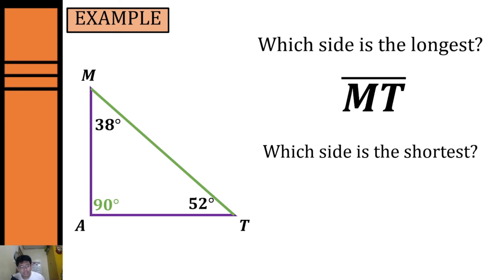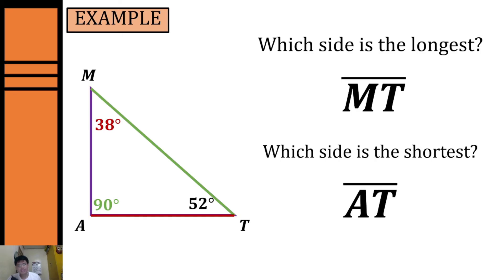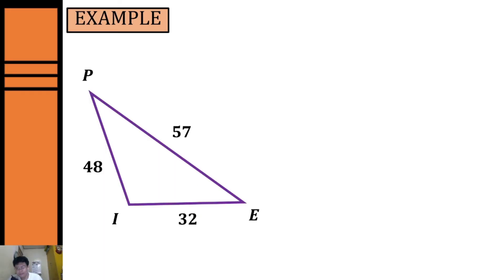Now let's look for the shortest side. To get our shortest side we have to identify our smallest angle. Our smallest angle in this triangle is angle M with 38 degrees. So the side opposite the smallest angle will be the shortest side — that will be side AT.